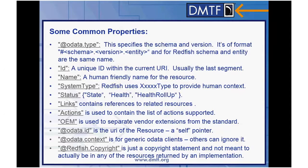The first thing you'll notice is @odata.type. This specifies the schema and the version of that schema that defines this individual resource. It's of the format schema.version.entity, where the version has underscores separating the numbers — so you'll see V number_number_number, and then the entity that follows it. For Redfish, we try to keep the schema name and the entity name the same just for ease, and that should help you track down the schema definition either in JSON or CSDL. I'll show you all of these in just a second.